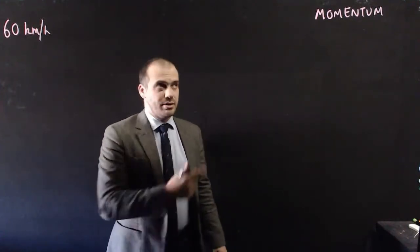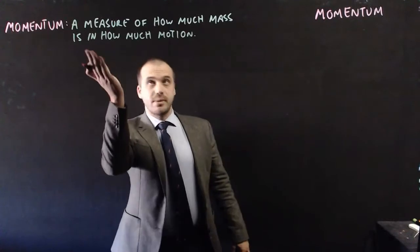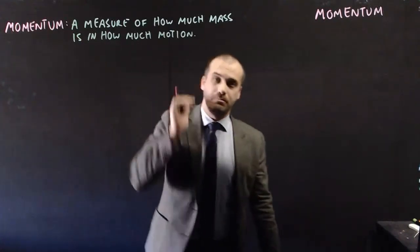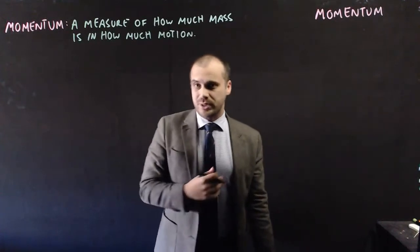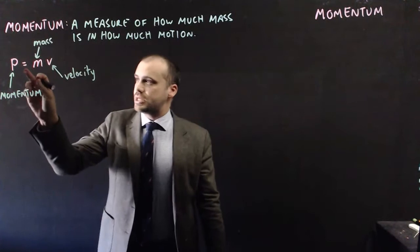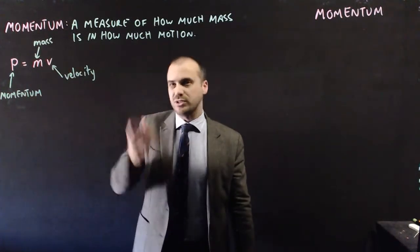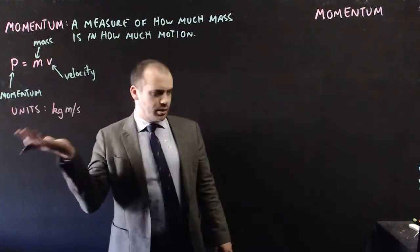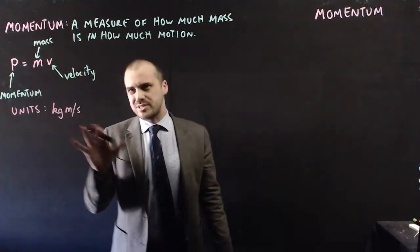So what we're talking about here is momentum. Momentum is a measure of how much mass is in how much motion, and it's given by the following formula: P equals mv. Momentum is equal to mass times velocity. And the units for momentum are a little bit strange: kilogram meters per second.